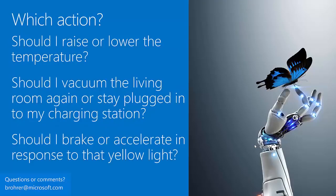The fifth question is: which action should I take? When a machine — especially a robot — needs to make a low-consequence decision it gets to make repeatedly, reinforcement learning is a way to do this and to learn from experience. An automatic temperature control system needs to answer: should I raise or lower the temperature? A little vacuum cleaner needs to answer: should I vacuum the living room again or stay plugged in? A self-driving car may need to answer: should I brake or accelerate in response to that yellow light? This is a bit different from the other questions, and we won't talk about it more today.